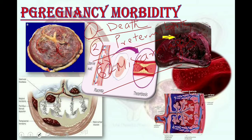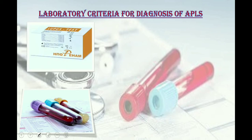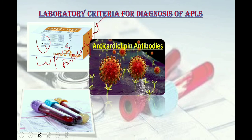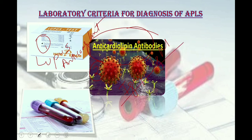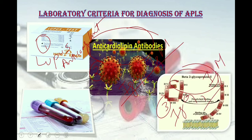For the laboratory criteria of antiphospholipid syndrome, three antibodies should be checked. First, lupus anticoagulant should be present in plasma on two or more occasions at least 12 weeks apart. Second, anti-cardiolipin antibody of IgG or IgM isotypes in serum or plasma on two or more occasions at least 12 weeks apart. Third, anti-beta-2 glycoprotein-1 antibody of IgG or IgM isotype in serum or plasma on two or more occasions at least 12 weeks apart. Once done, the tests must be repeated at 12 weeks interval, and if positive, the laboratory criteria is fulfilled.